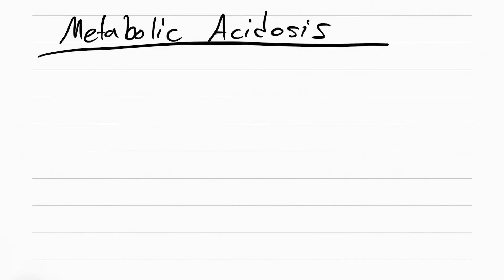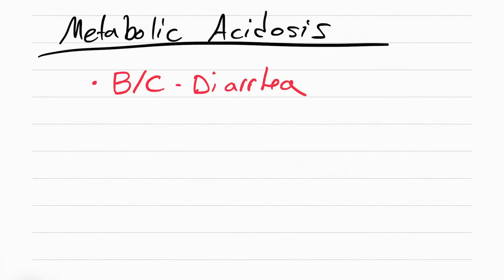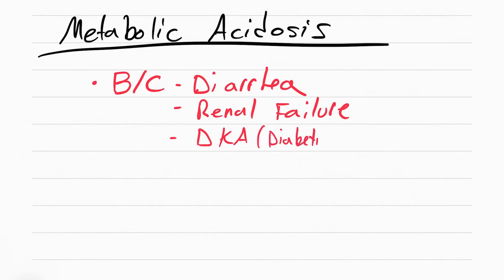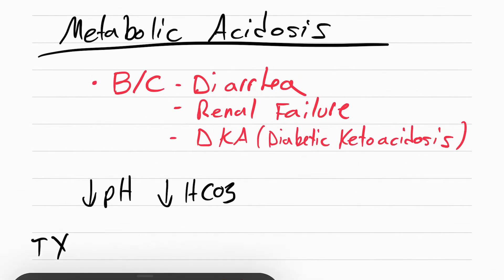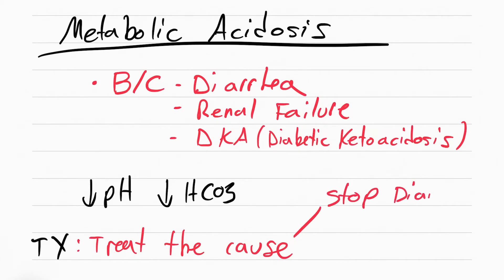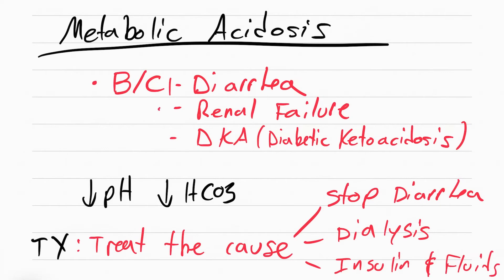The last acid-base imbalance is metabolic acidosis — I like to call this metabolic 'ass-cidosis' because it's caused by diarrhea, but it can also be caused by renal failure or DKA. The pH will be down and the HCO3 will be down. Treatment involves treating the cause: stop whatever is causing the diarrhea, fix renal failure with dialysis, and treat DKA with insulin and fluids.